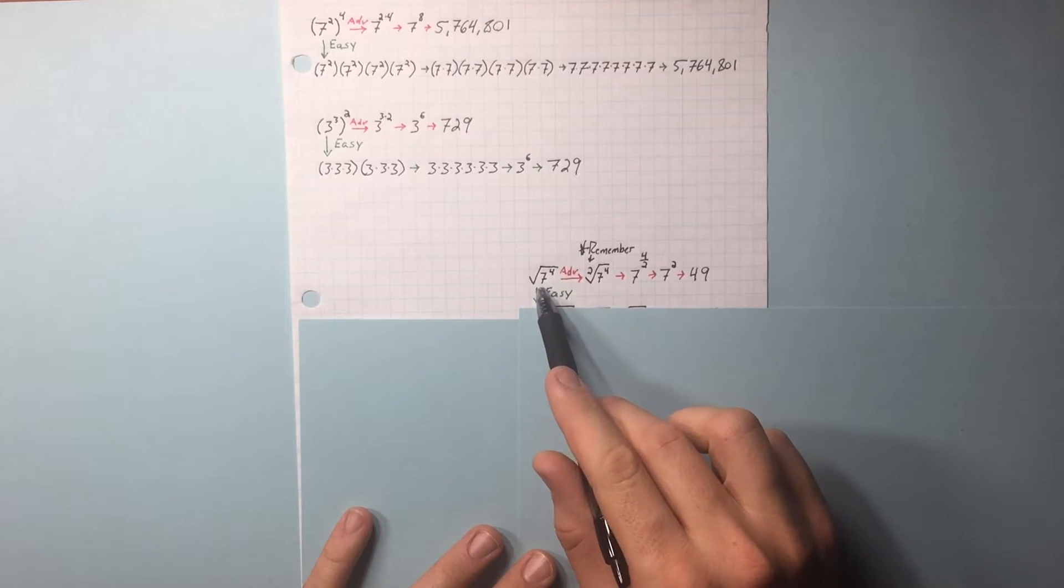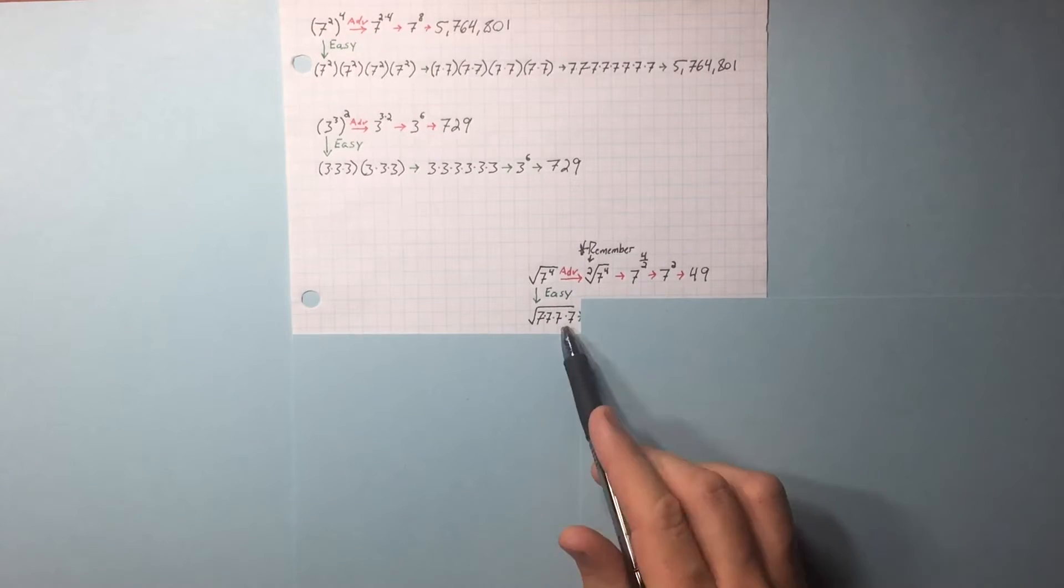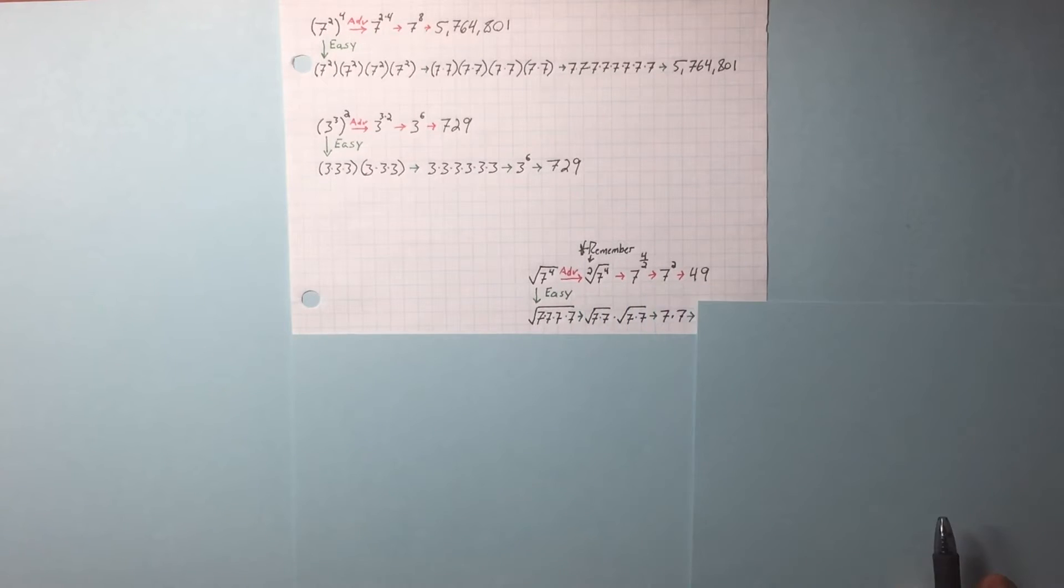We have 7 to the 4th underneath the radical. We can expand that out. We have two sets of perfect squares. We end up with 7 times 7, 49. Here's another one.